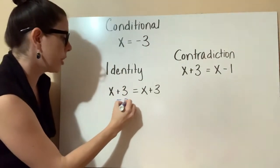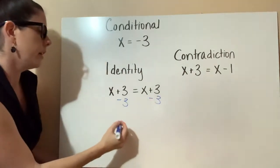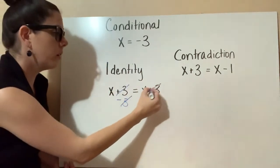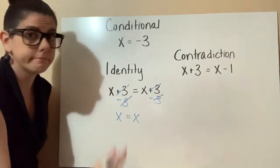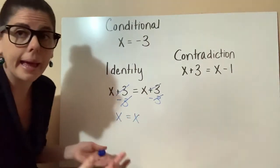If I were to subtract 3 from both sides, that would give me, these would cancel out on both sides, and that would just give me x equals x. So it could be any number you want.